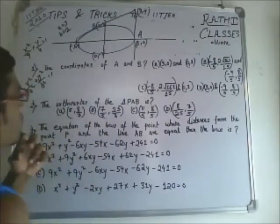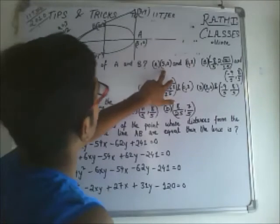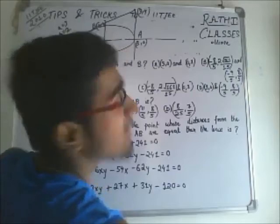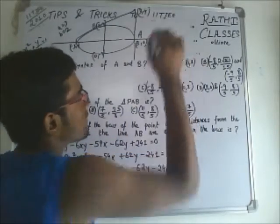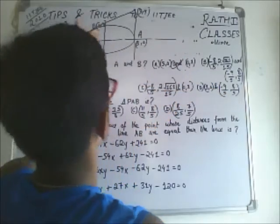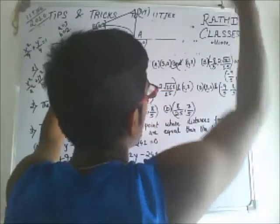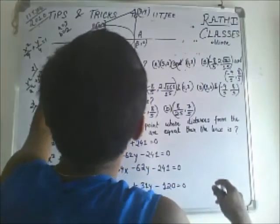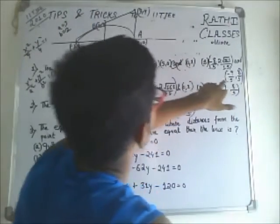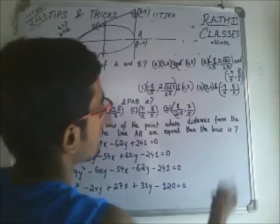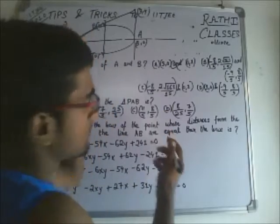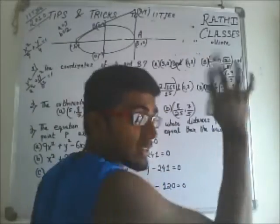Now check the options. Option A gives (3, 0) — yes, that can be an answer — and (0, 2) — no, it can't, so eliminate it. Option B gives (−8/5, 2√161/15) which could work, and (−9/5, 8/5). But both coordinates of A and B lying in the second quadrant is not possible as seen by the diagram, so option B is also not correct.